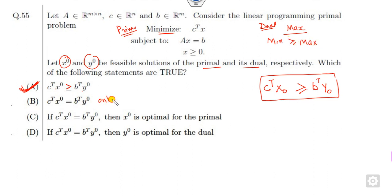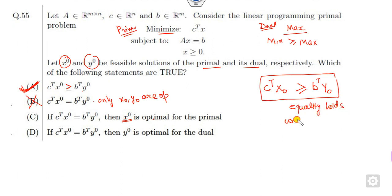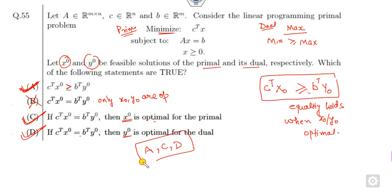Equality holds only when x₀ or y₀ are optimal, but if it is not given, that option cancels. Here x₀ is optimal, so equality holds. Similarly, y₀ is optimal, so equality holds in that case too. Therefore the correct answers are A, C, and D. That is very simple using the weak duality theorem.